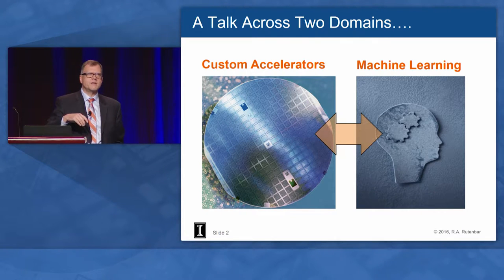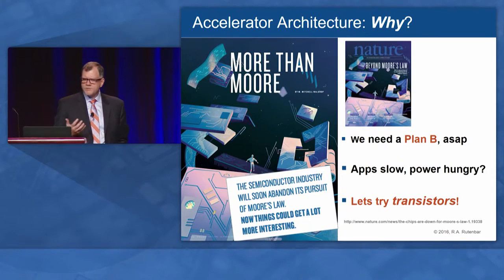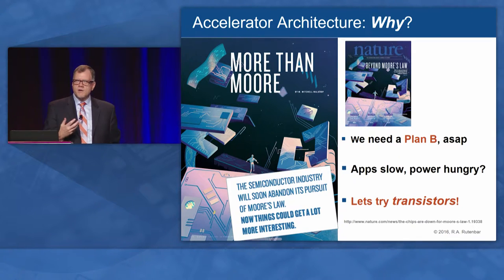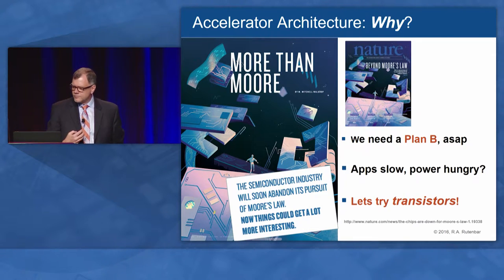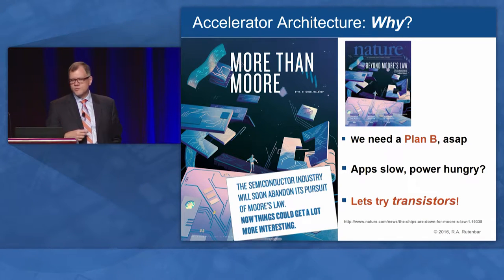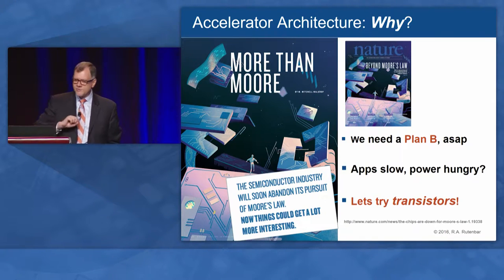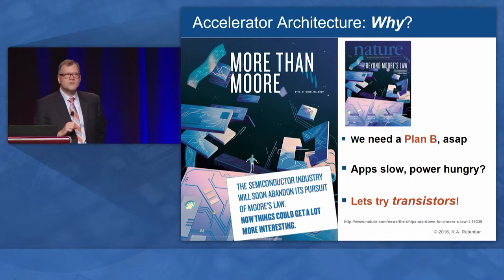Let's start with the left-hand side of the slide: custom accelerators — why are people doing this? The basic answer is we have been blessed with the opportunity to ride Moore's Law for the last 40 or so years, and we urgently need a Plan B, because it's just about to give up the ghost. When the cover of Nature — from an issue in February 2016 — says 'Beyond Moore's Law,' and the article inside is titled 'The Chips Are Down for Moore's Law,' with the header saying the semiconductor industry will soon abandon its pursuit of Moore's Law, and now things could get a lot more interesting — you know something is up.